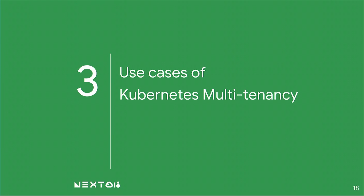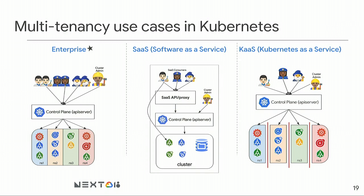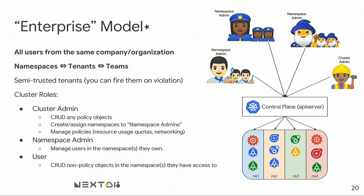Now let's evaluate common use cases for Kubernetes multi-tenancy. We're going to look at three different models: enterprise, where every team is potentially a tenant; software as a service, where most users don't see Kubernetes but the infrastructure runs on it; and Kubernetes as a service, where you're accepting workloads from people you don't know.